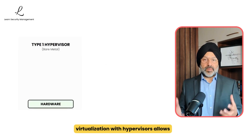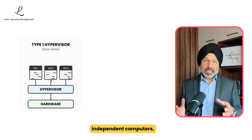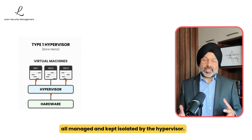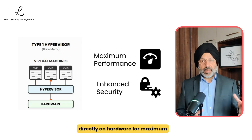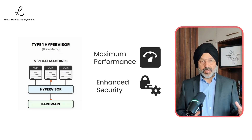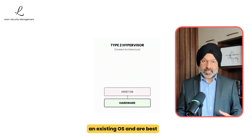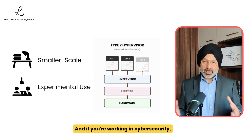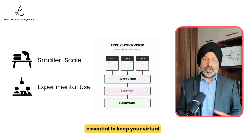To sum up, virtualization with hypervisors allows one physical machine to function as many independent computers, each with its own operating system and resources, all managed and kept isolated by the hypervisor. Type 1 hypervisors run directly on hardware for maximum performance and security, while type 2 hypervisors run on top of an existing OS and are best for small-scale or experimental environments. If you are working in cybersecurity, enforcing strict controls and best practices is essential to keep your virtual environments secure.